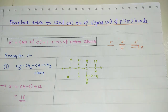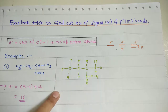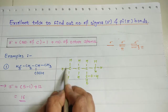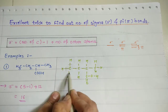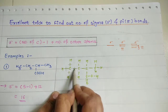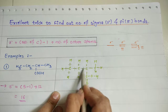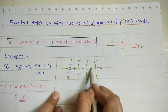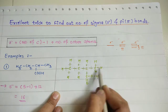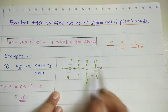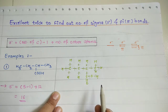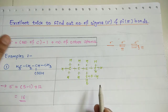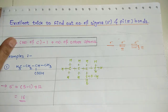Now take a look at how many sigma bonds are in the drawn structure. Counting each single bond individually: 1, 2, 3, 4, 5, 6, 7, 8, 9, 10, 11, 13, 14, 15, 16. I think I may have missed one, so let me recount carefully to confirm we reach 16.